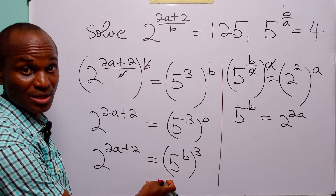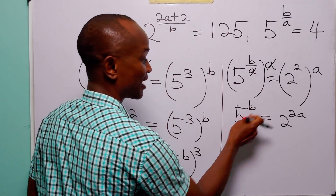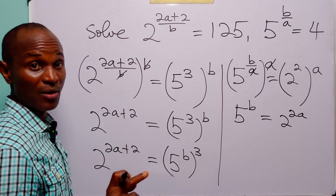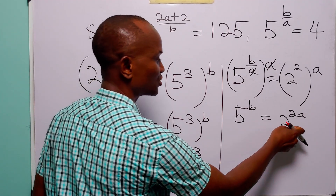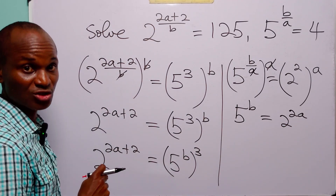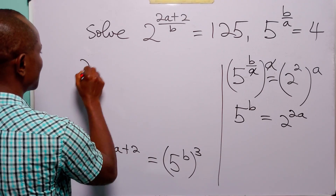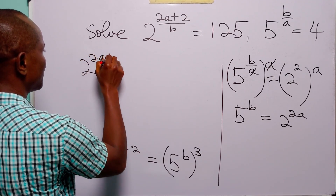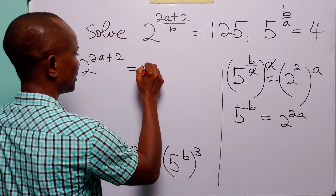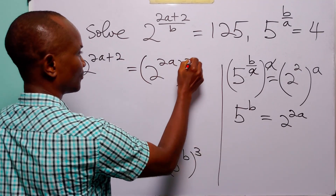Now let us come back to the first equation. We can see that here we have 5 raised to the power B, and from the second equation we also have 5 raised to the power B. So, to finish solving, we will substitute 2 to the power 2A for 5 to the power B in the first equation. This becomes 2 to the power (2A + 2) is equal to (2 to the power 2A) cubed.